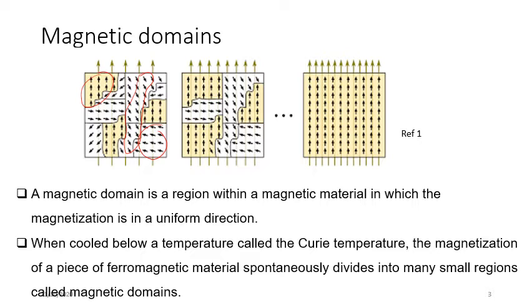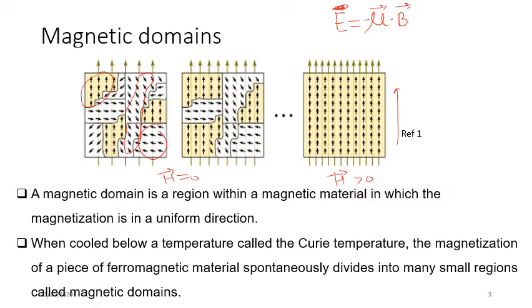This domain structure is true when the externally applied magnetic field intensity H is zero. When we apply a magnetic field H greater than zero, all the spins get aligned in one direction. This happens because the energy of the magnetic moment vector in an external magnetic field is given by minus mu dot B.